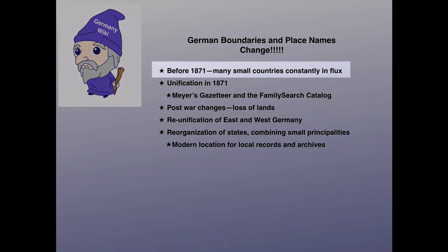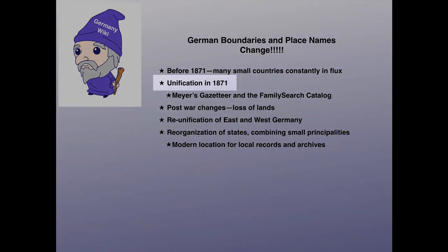Prior to 1871, there wasn't a Germany. There were many small countries, and the boundaries and names of those countries were constantly in flux. In 1871, all these little countries were unified into Germany, and the little countries became provinces or states.